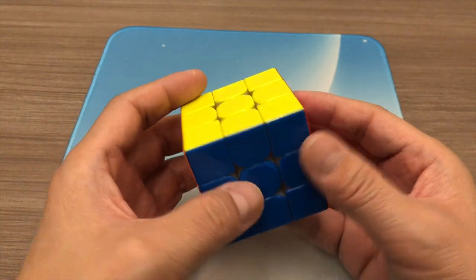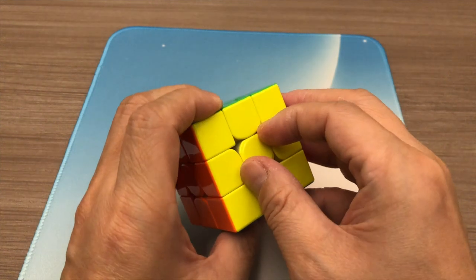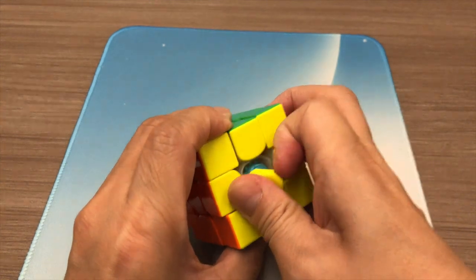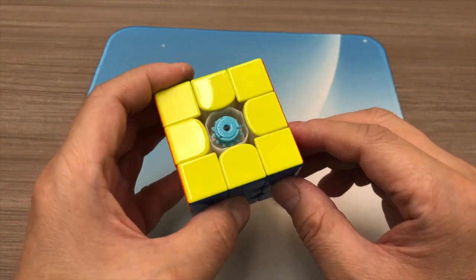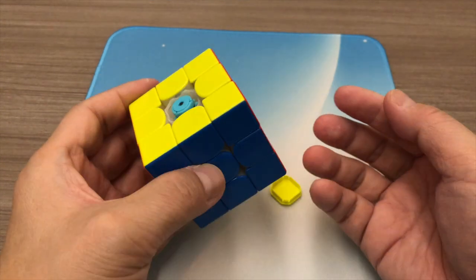Let's open the yellow centre of the cube. So this is the adjustment system, where you can tune your puzzle cube.